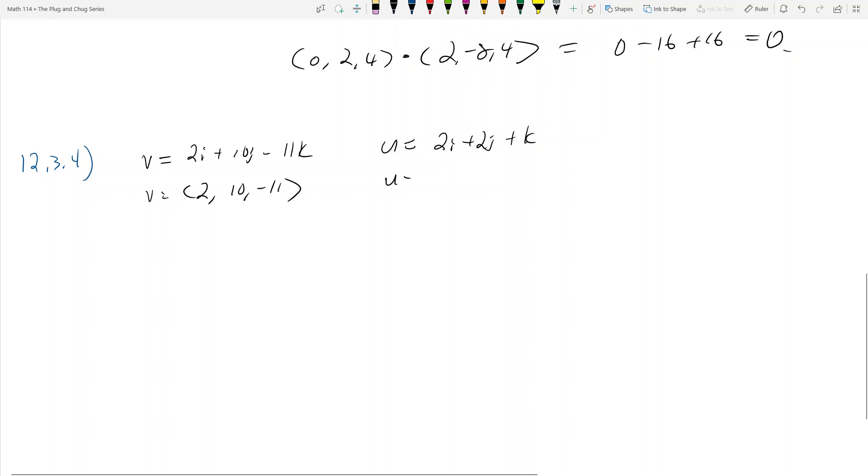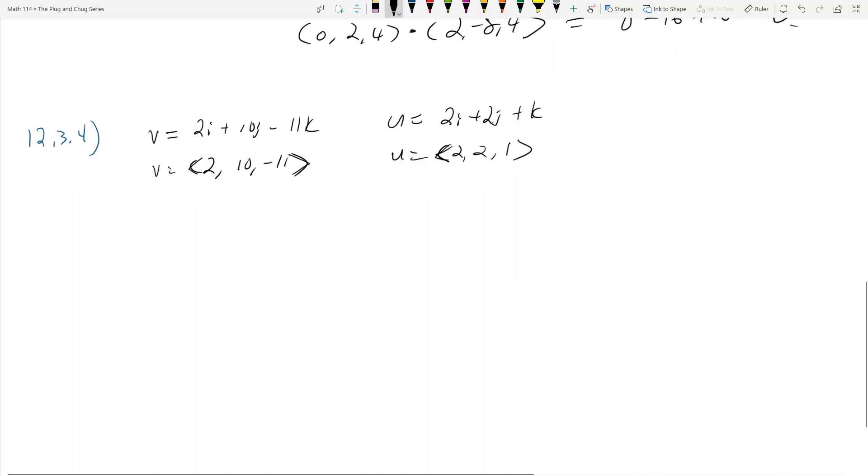And u is equal to 2, 2, 1. And I use these angled brackets for vectors. And then 2 is the i, 10 is the j, and negative 11 is the k component. So yeah, it's just less work. And so what does the problem ask?